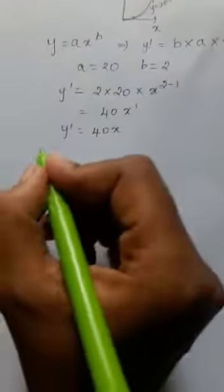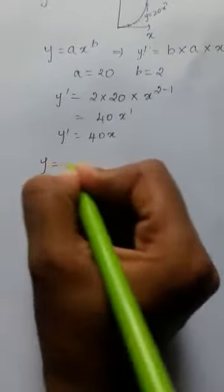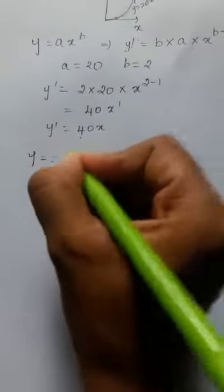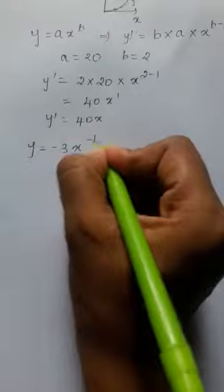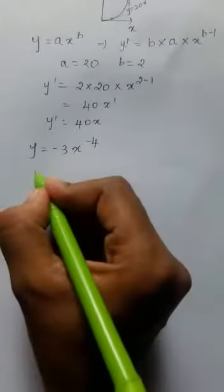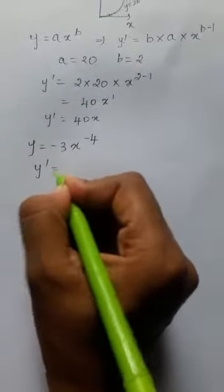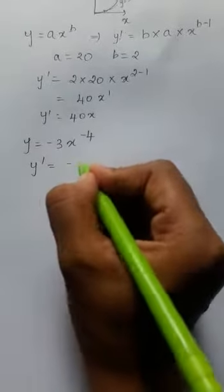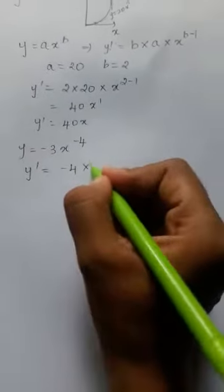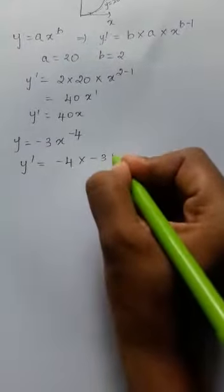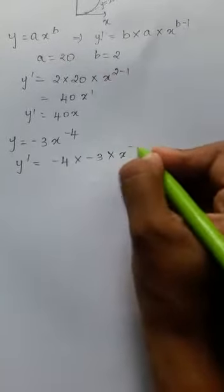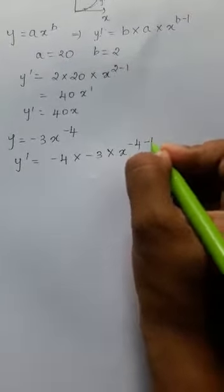Now let's move on to one more simple example: y equals minus 3x to the power minus 4. So my derivative will be y dash equals negative 4 into minus 3 into x to the power negative 4 minus 1.